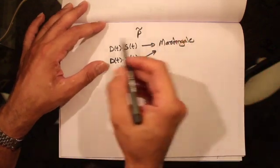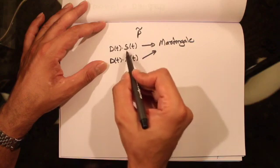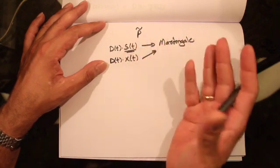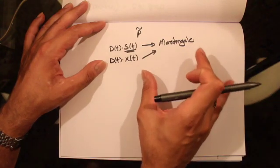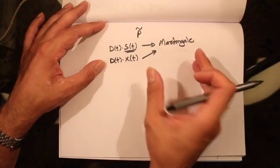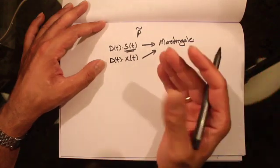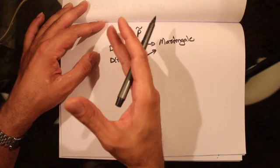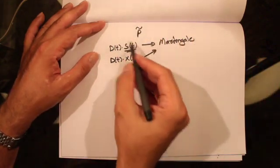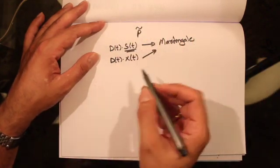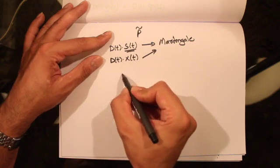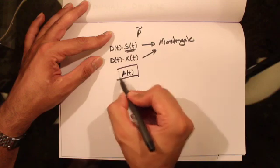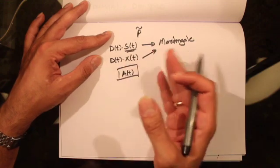One thing to notice is that in the previous lectures, when we talked about the stock process, the stock basically did not pay any dividend. So today we want to develop theory on stocks which pay some dividend. We're going to develop theory for stocks that pay a continuous dividend at the rate of 'a_t' per unit time. This is the rate of dividend paid by the stock per unit time.